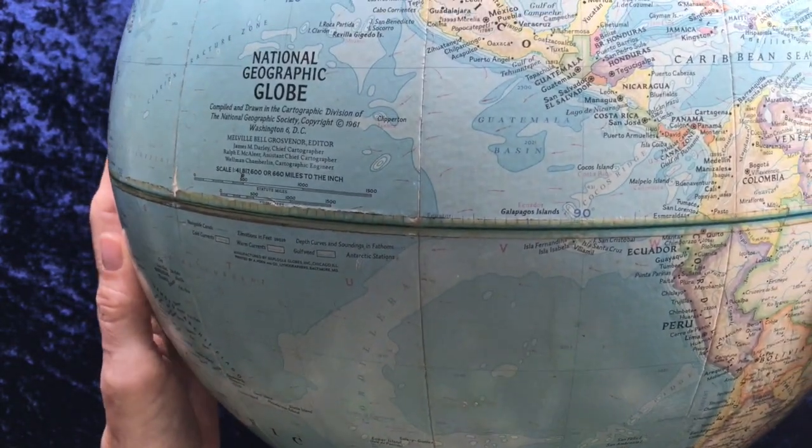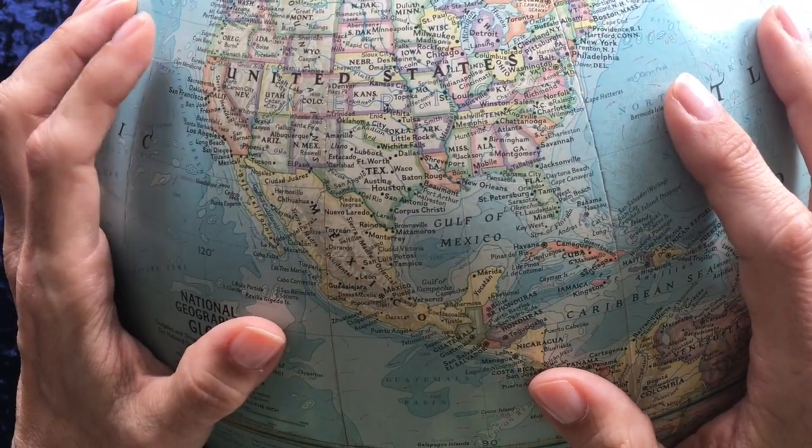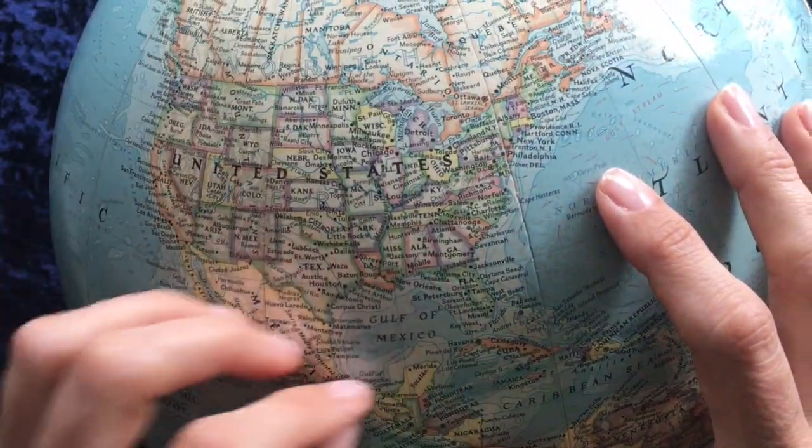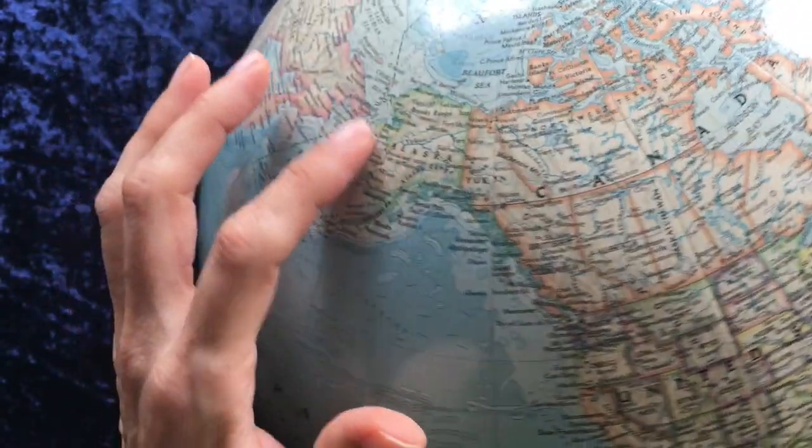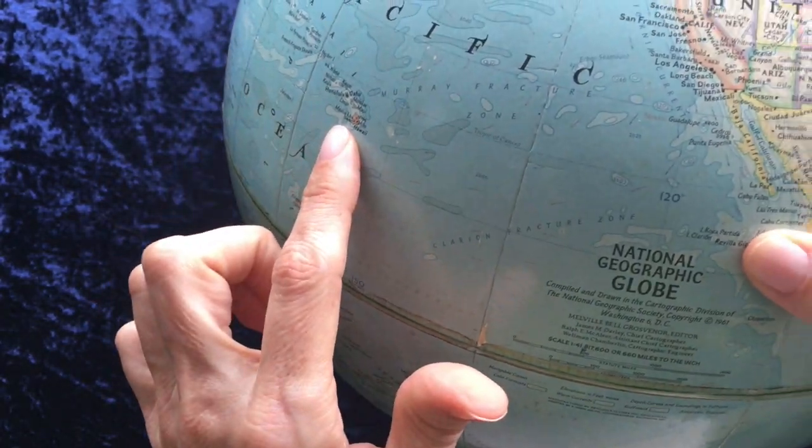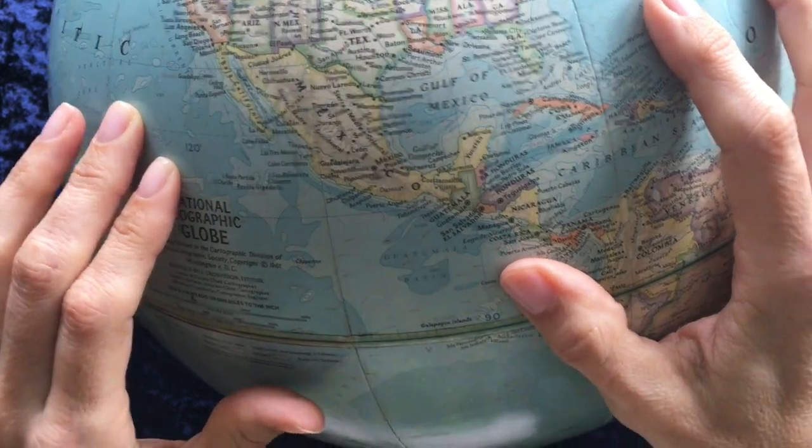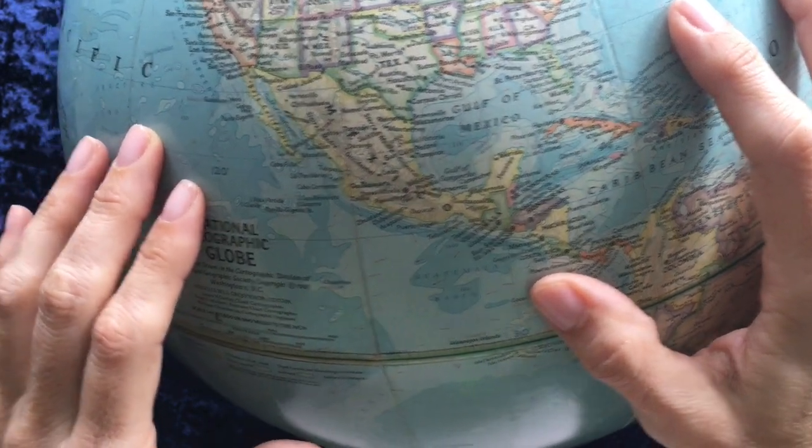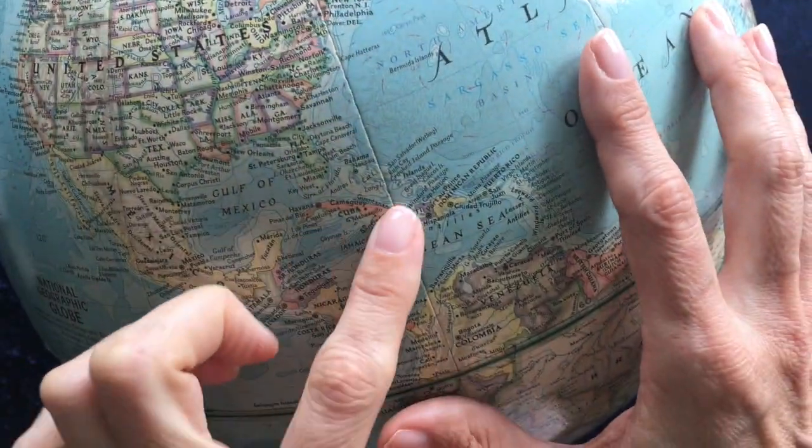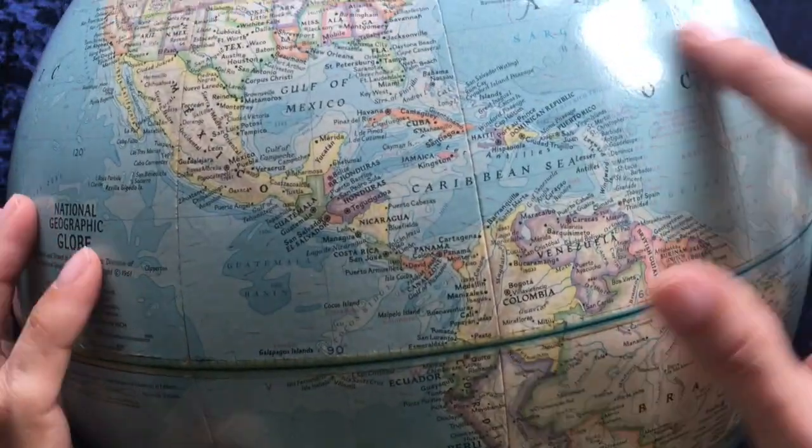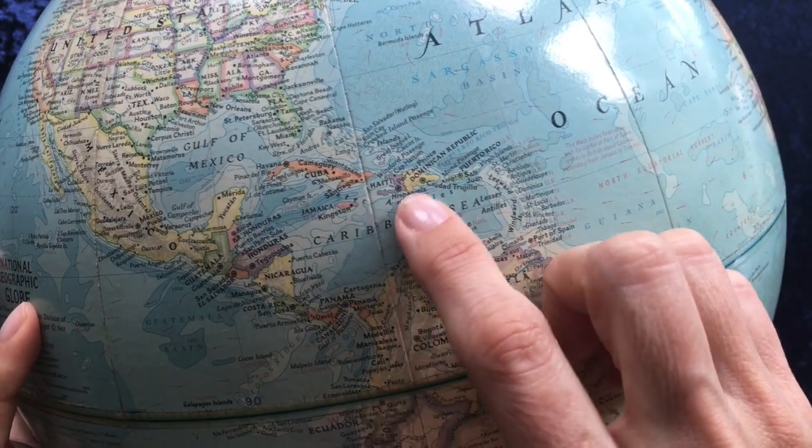So from 1961, let's start with the United States, seeing as this is an American National Geographic Society globe. There we have the 48 contiguous states. Alaska, Hawaii, across the Pacific, the Murray Fracture Zone. There's Canada and the Hudson Bay, Mexico and Central America, Cuba, Jamaica, Dominican Republic.